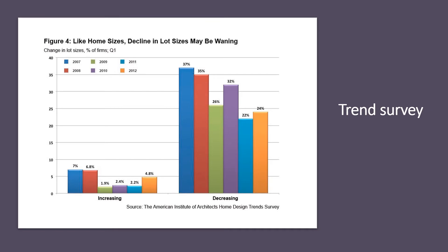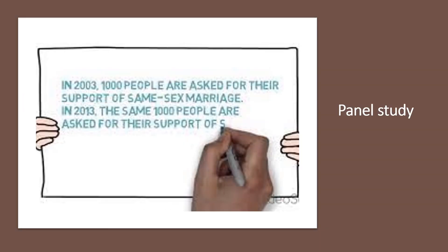In this trend survey example, you are asking newlyweds their attitude towards marriage. The goal is to see if the attitudes of newlyweds in the new millennium are the same as those of newlyweds from the 1980s to 1990s — to see how the trend has changed in terms of attitudes towards marriage. Then we have the panel study.